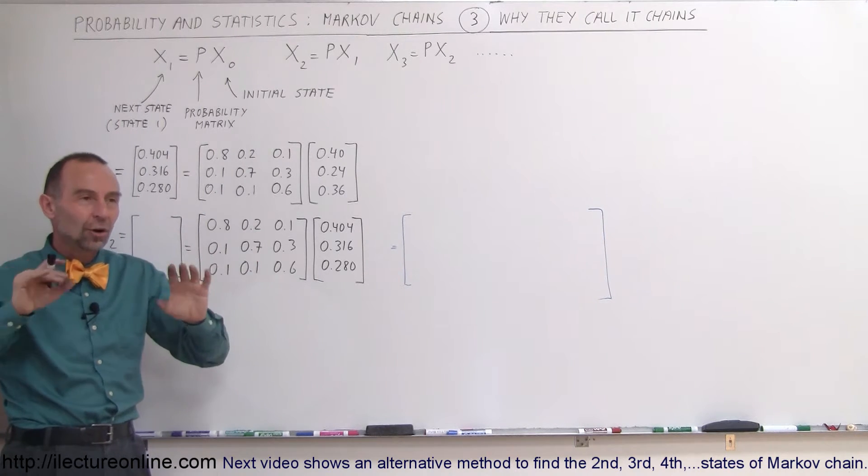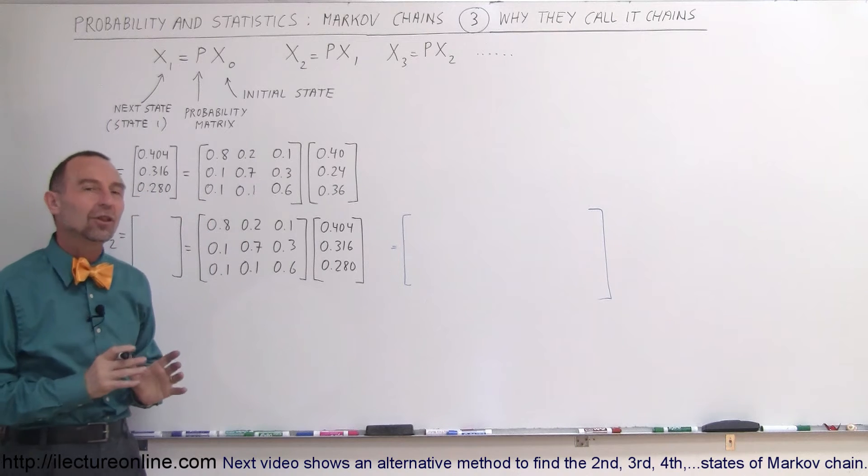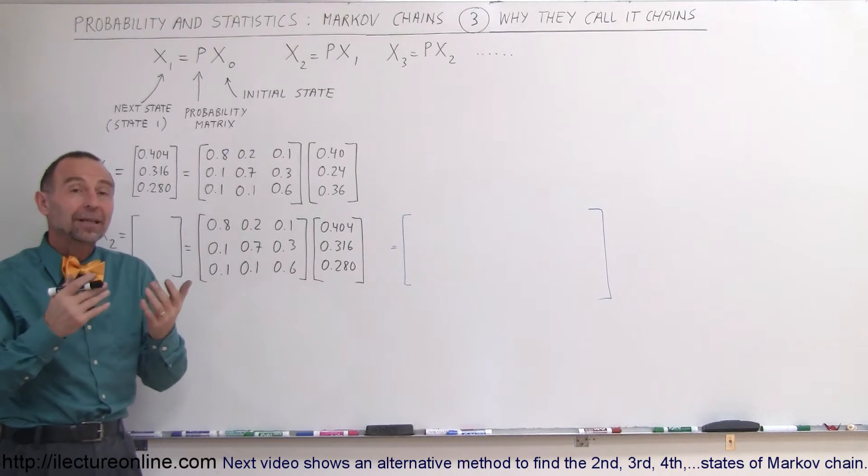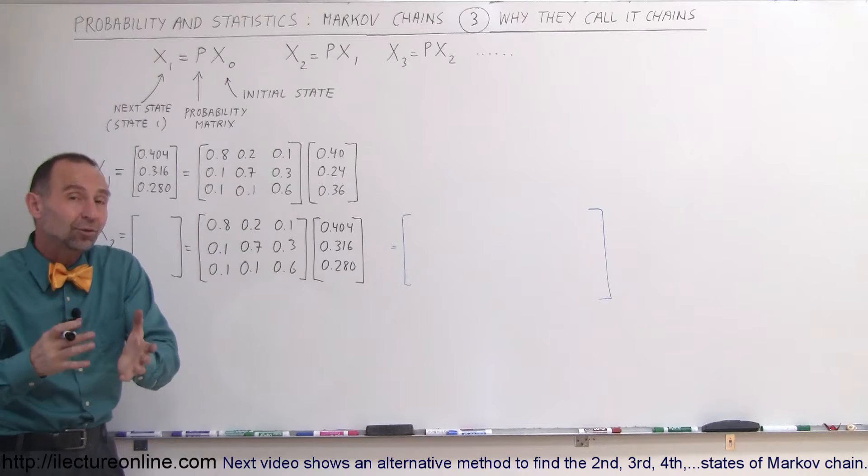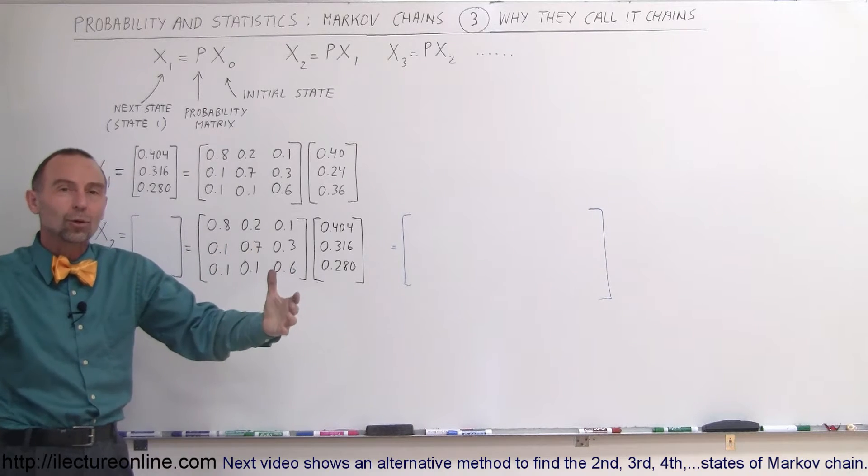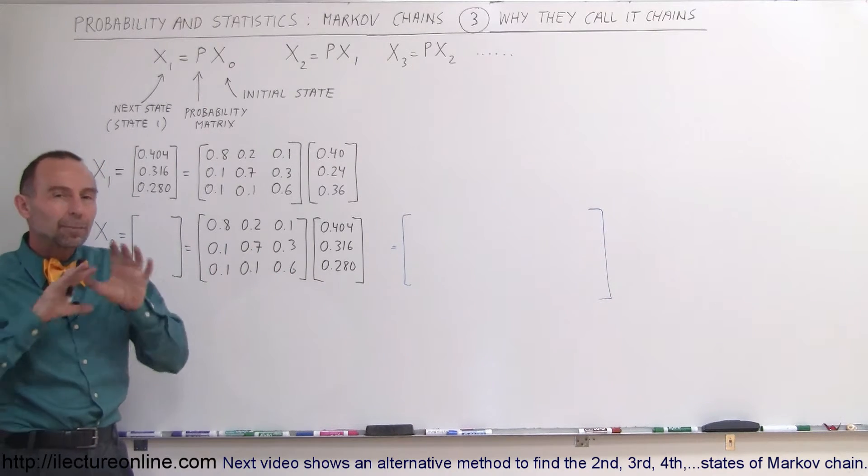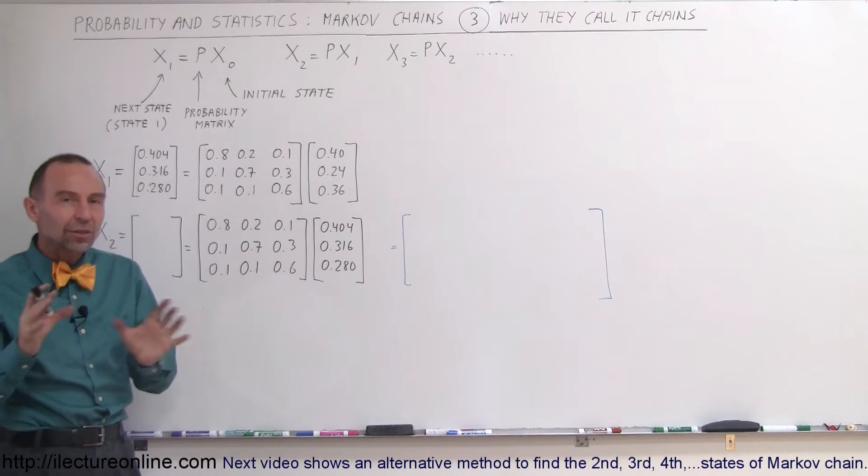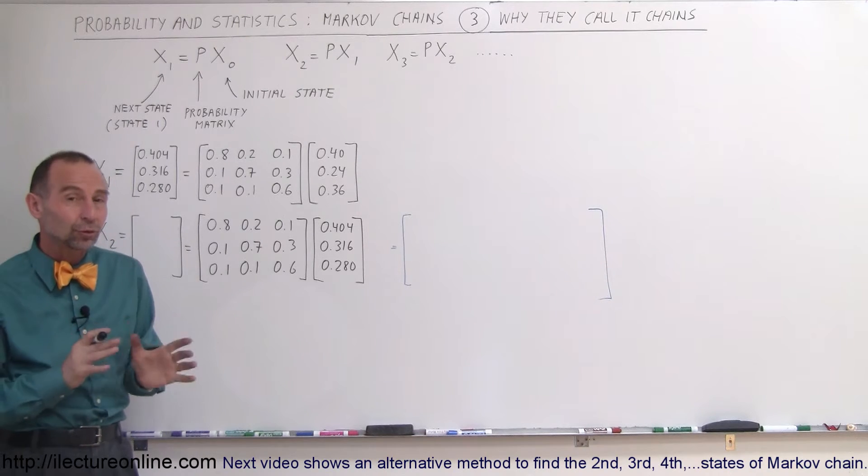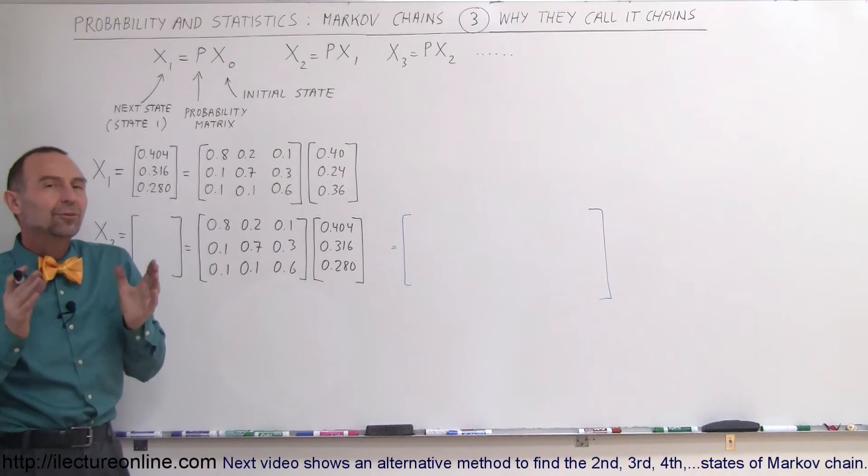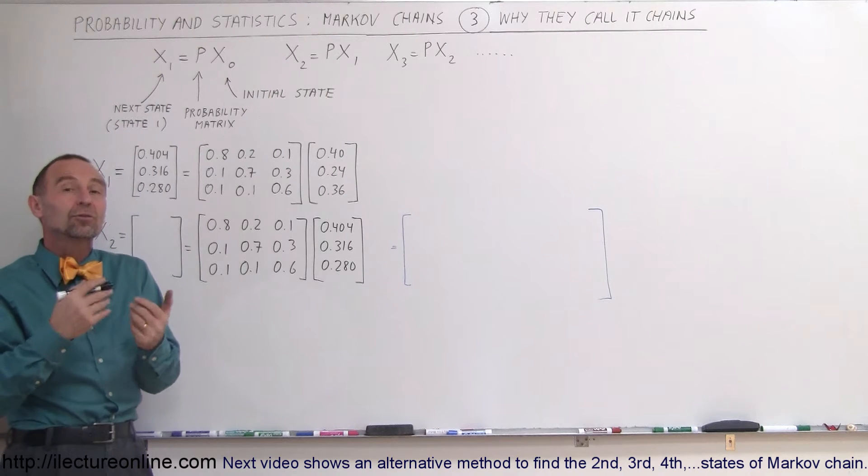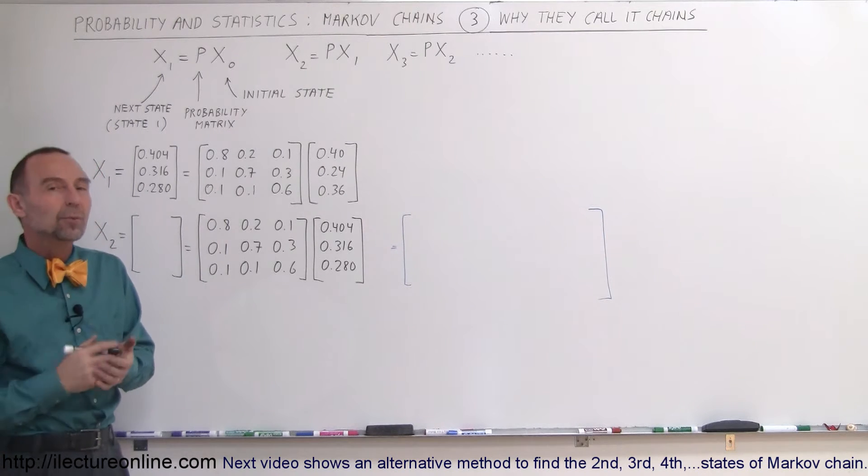For example, we had three stores with a certain number of customers going to each. We had a probability that the customer would stay in the same store or go to another store the following week. We put that in a probability matrix of how we thought people would move from store to store, and from that we could predict the number of customers in each store the following week.